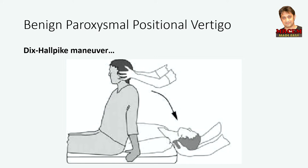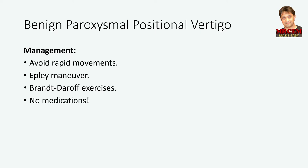To perform the Dix-Hallpike maneuver, ask the person to sit upright on the couch with their head turned 45 degrees to one side. From this position, lie the person down rapidly, supporting their head and neck, until their head is extended 20 to 30 degrees over the end of the couch with the chin pointing slightly upwards and the tested ear downwards. Support the head to maintain this position for at least 30 seconds, and observe the eyes closely for up to 30 seconds for the development of nystagmus. Most people with BPPV recover over several weeks even without treatment. Advise patients to avoid rapid movements, offer a repositioning maneuver such as the Epley maneuver, and consider Brandt-Daroff exercises. No medications are needed for BPPV.